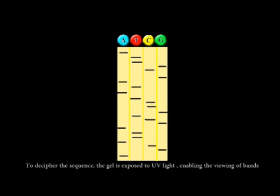To decipher the sequence, the gel is exposed to UV light, enabling the viewing of bands. As a result, the gel can be read from one end to the other. The bands are then combined to form a single sequence including all nucleotides.